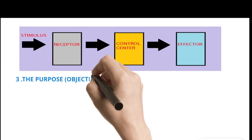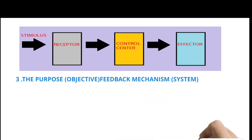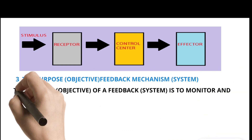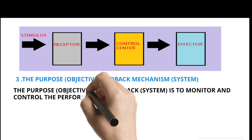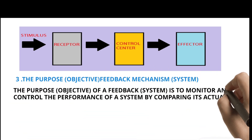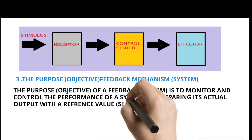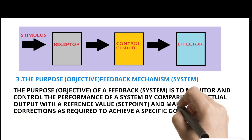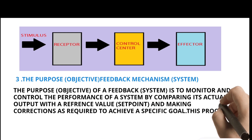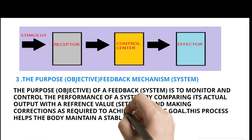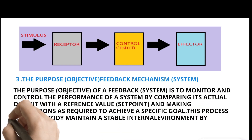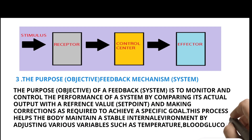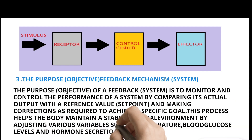The Purpose and Objective of a Feedback Mechanism System: The purpose and objective of a feedback system is to monitor and control the performance of a system by comparing its actual output with a reference value or set point, and making corrections as required to achieve a specific goal. This process helps the body maintain a stable internal environment by adjusting various variables such as temperature, blood glucose levels, and hormone secretion.